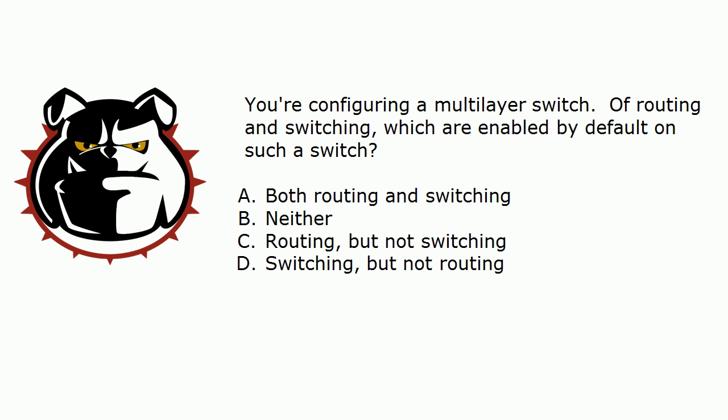On multilayer switching — we've all tripped over this and I don't want you to trip on exam day. Of routing and switching, which are enabled by default? The answer is switching but not routing, because all of your ports are going to be switch ports. If you want them to be routed ports, you've got to configure them as such with the 'no switchport' command. You may need to add some other commands globally as well, but you've got to make the individual port a routed port with the 'no switchport' command.